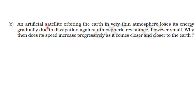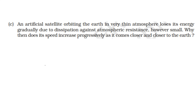An artificial satellite orbiting the Earth in a very thin atmosphere loses its energy gradually due to dissipation against atmospheric resistance. However, its speed increases progressively as it comes closer and closer to the Earth.